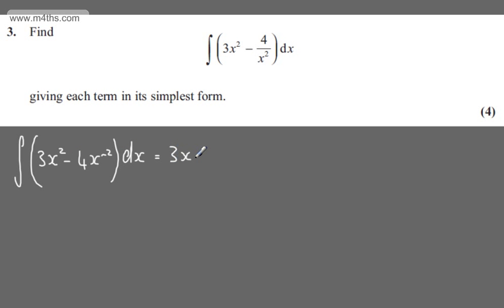So we'll have 3x to the power of 3 divided by the new power of 3, minus 4x to the minus 1 divided by minus 1 plus our constant of integration.